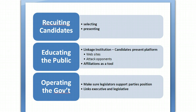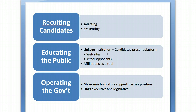A political party serves six functions. Function one is to recruit candidates — the most important thing parties do is recruit, select, and get their candidate elected. When campaigning, their effort is to educate the public about their candidate and the platform the party stands for. A political party also serves as a linkage institution, connecting the people with government. The third function is to operate government — legislators work to support positions and platforms and try to turn them into public policy, linking the different branches of government.